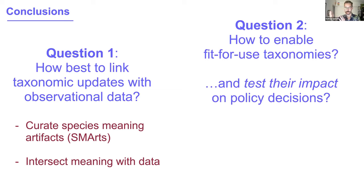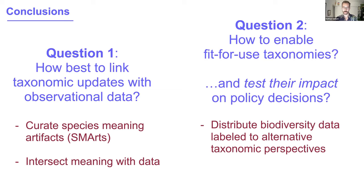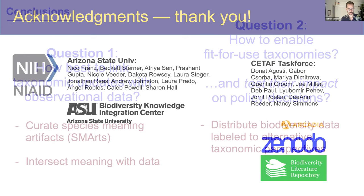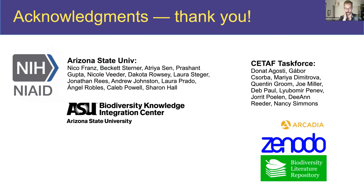To get back to the original questions: how do you link taxonomic updates with observational data? We're proposing curating species meaning artifacts — updating range maps when there's a taxonomic split, tracking which gene sequences go with which name usages, and intersecting that meaning with observational data. This enables fit-for-use taxonomy, where disambiguated biodiversity data can be distributed according to alternate taxonomic perspectives to test hypotheses.